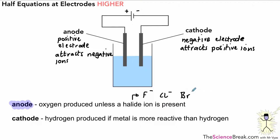Halide ions are fluoride, chloride, bromide, and iodide. If those are present we're going to get fluorine, chlorine, bromine, or iodine. At the cathode, hydrogen is produced if the metal is more reactive than hydrogen — that's what we have to remember as well.